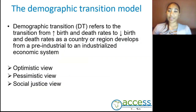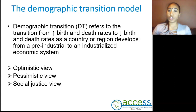To understand the factors that affect human populations, we have what is called the demographic transition model. The demographic transition model refers to the transition from an increase in birth and death rates to a decrease in birth and death rates as a country or region shifts from a pre-industrial to an industrialized economic system.